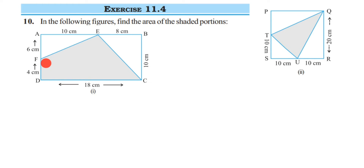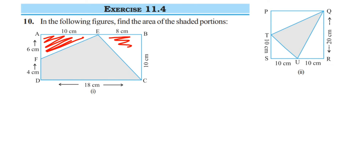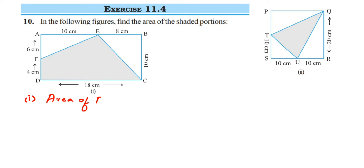The shaded portion in the first figure is neither a rectangle nor a triangle — it's a different shape. So how to find the area of this shaded portion? First we're going to find the area of the whole rectangle. The length is 18 centimeters and the breadth is 10 centimeters. So area of rectangle ABCD equals length into breadth, which is 18 multiplied by 10, equal to 180 centimeter square.